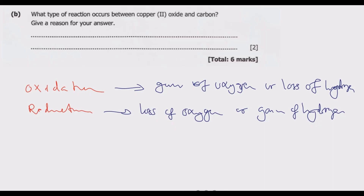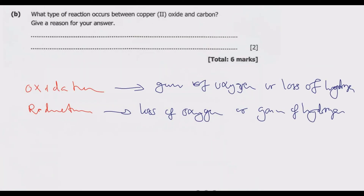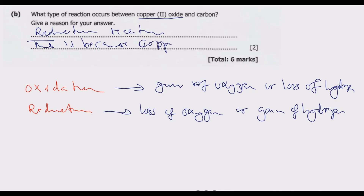When copper oxide reacts with carbon, copper oxide is losing oxygen. So copper oxide is being reduced — this is a reduction reaction. The reason is that copper oxide is losing oxygen in the reaction.